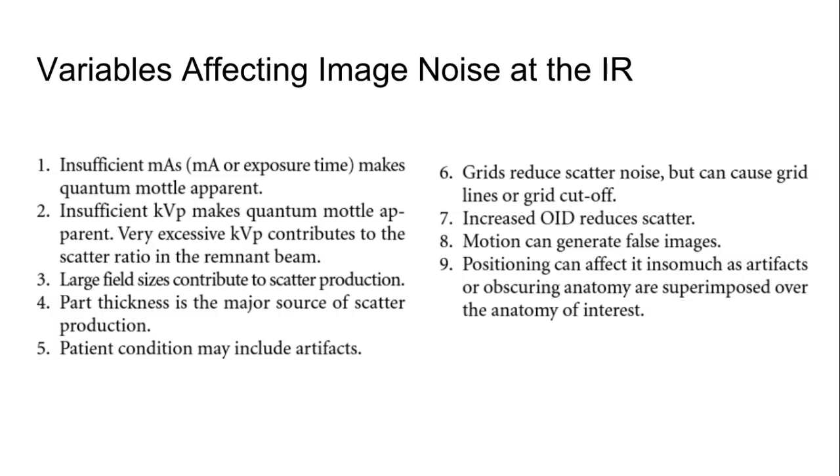Increased OID, we said several times, is going to reduce scatter. That's our air gap technique. Motion is going to create those false images and lead to kind of blurry images. And obviously, contrast goes down and noise goes up. And positioning can affect in so much as artifacts or obscuring anatomy or superimposed. Really not much you can do about that. I mean, improper positioning is not good for the image. Honestly, not sure how much there would be an effect on noise at the image receptor, other than if your technique was not enough. So let's say you wanted to do something at a certain obliquity and you maybe used more obliquity than was necessary, causing the part thickness to become larger and thus you didn't use enough exposure. That could possibly give you some noise. That's really all I can read into that one.